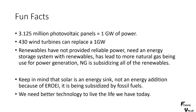Here are some fun facts — this is the last slide. 3.125 million photovoltaic panels equals one gigawatt of power. 430 wind turbines can replace a one-gigawatt plant if they're producing all the power needed — it may have to be multiples of that for reliable output. Renewables have not provided reliable power; they need an energy storage system, and this has led to more natural gas being used for power generation. So natural gas is subsidizing all of the renewables, not only in them being built but also in them operating. Keep in mind that solar is an energy sink, not an energy addition, because of the low EROEI, and it is being subsidized by fossil fuels.